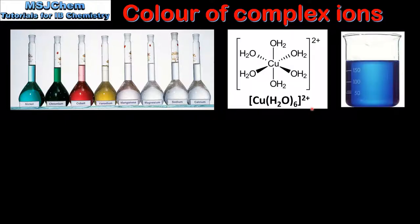In a previous video we saw that transition elements form complex ions. The complex ion shown here is the hexa aqua copper 2 ion. The central metal ion is a copper 2+ ion and the ligands are 6 water molecules.